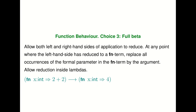There is another choice of evaluation strategy called full beta reduction. Alpha conversion means renaming formal parameters, and beta reduction means substituting arguments for formal parameters. The full beta reduction strategy means that both the left and right-hand sides are allowed to reduce, and at any point where the left-hand side has a function term you replace all occurrences of the formal parameter with the argument. You can also allow reductions inside of lambda — so Fn x colon int goes to 2 plus 2 can reduce to Fn x goes to 4.